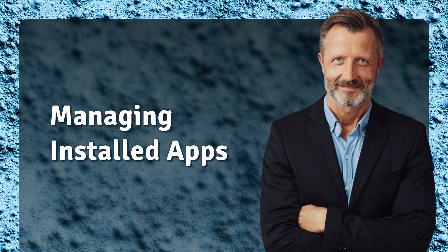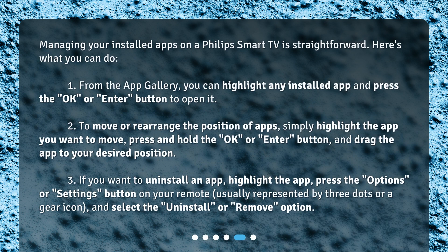Managing installed apps. Managing your installed apps on a Philips Smart TV is straightforward. Here's what you can do. 1. From the app gallery, you can highlight any installed app and press the OK or Enter button to open it.